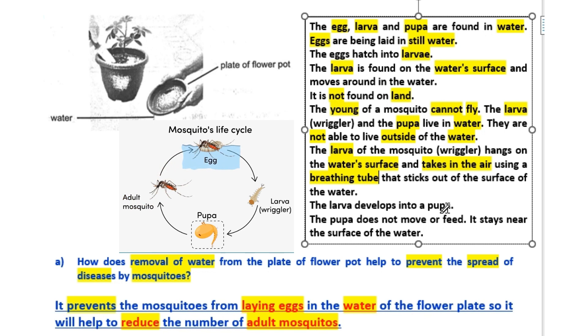The larvae develops into a pupa. The pupa does not move or feed. It stays near the surface of the water.